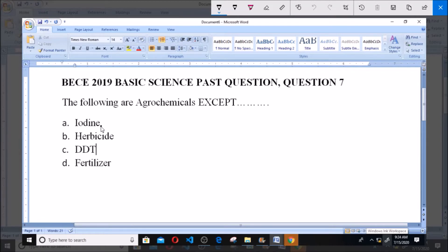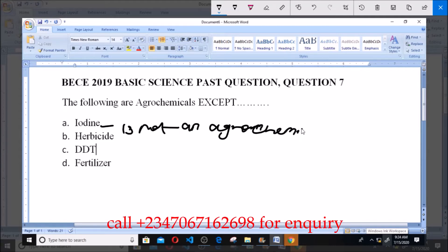Like we know, iodine is not an agrochemical. After iodine is not an agrochemical, and you know we have to pick an option which is not an agrochemical. But before we decide on our answer, let's move forward.